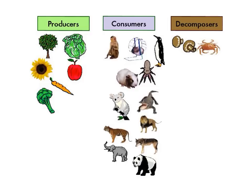Decomposers eat decaying matter, which are dead plants and animals, and in the process they break them down and decompose them. When that happens, they release nutrients and mineral salts back into the soil, which will then be used by plants. Bacteria, fungi, and mushrooms are examples of decomposers.